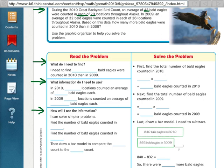In 2009, an average of 32 bald eagles were counted in each of 26 locations throughout Alaska. So the important information in that sentence is 32 each in 26. So another multiplication problem would be 32 times 26. So based on this data, how many more bald eagles were counted in 2010 than in 2009?